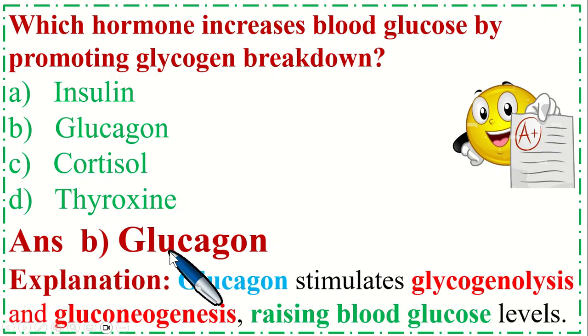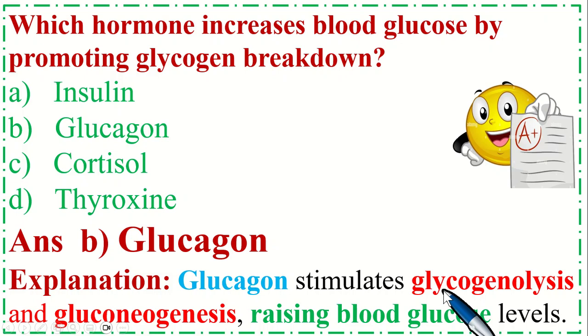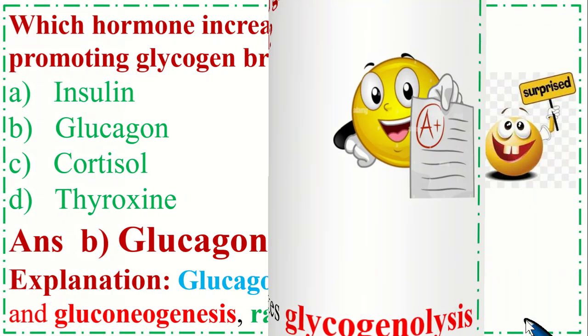The correct option is B, Glucagon. Glucagon stimulates glycogenolysis and gluconeogenesis, raising blood glucose level.